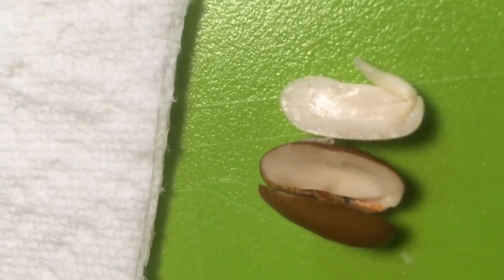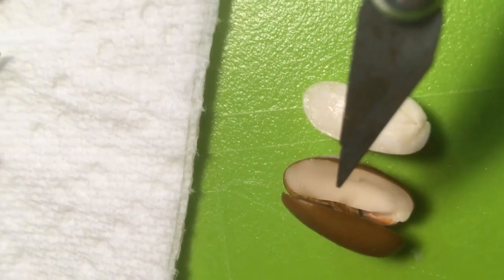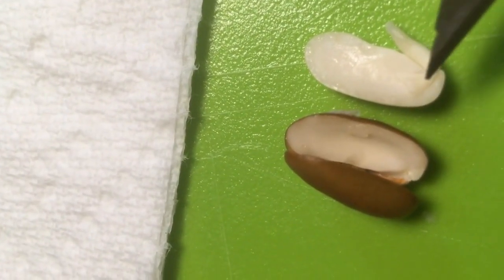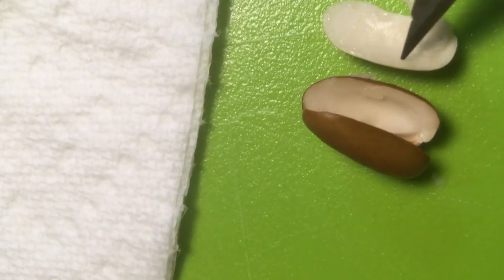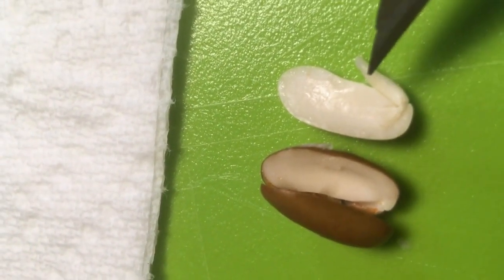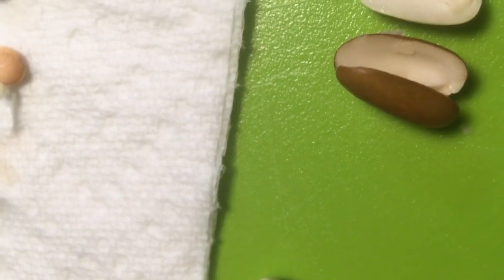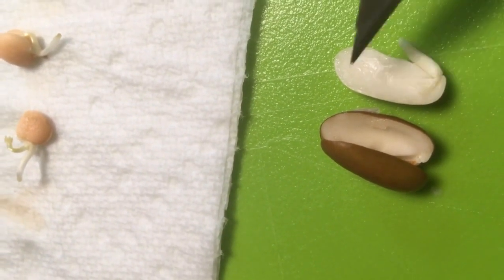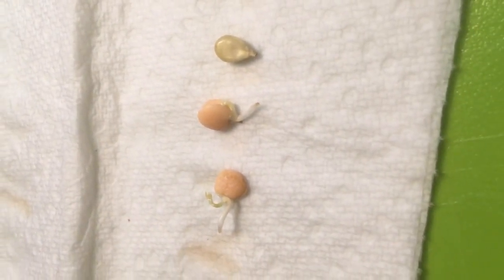There's another one, so you can see that skin right there, what we call the testa, and also you can see that root again, and then there's that feathery bit right there—we call that the plumule—and that we call the radical, it's going to become the root, and then there's that food store in there the plant's going to use to get itself ready. We've got some other seeds here to check, so let's check those ones out too.